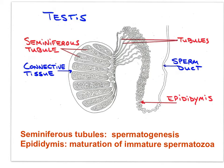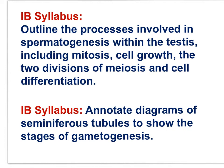Now let's dive into the details of spermatogenesis, which occurs in the seminiferous tubules of the testes. The IB syllabus statements are: outline the processes involved in spermatogenesis within the testes, including mitosis, cell growth, the two divisions of meiosis, and cell differentiation; and annotate diagrams of seminiferous tubules to show the stages of gametogenesis — the formation of gametes.